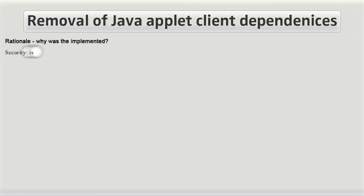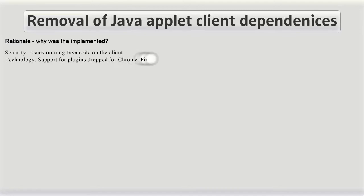Running Java applets on a client can present security problems and can provide a backdoor to unauthorized access to client machines. As a consequence, many vendors are dropping support for plugins that require Java applets to be installed altogether.